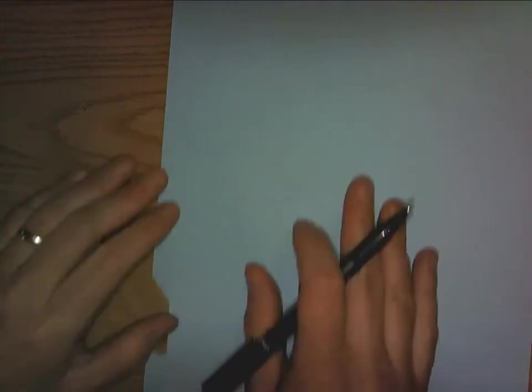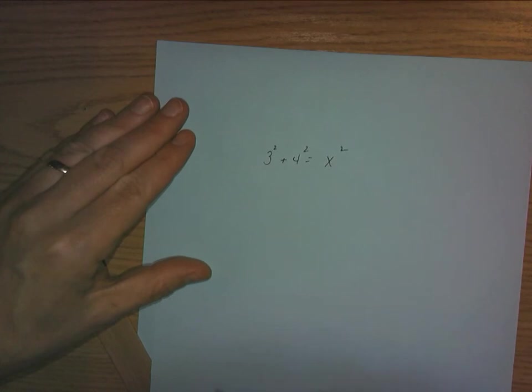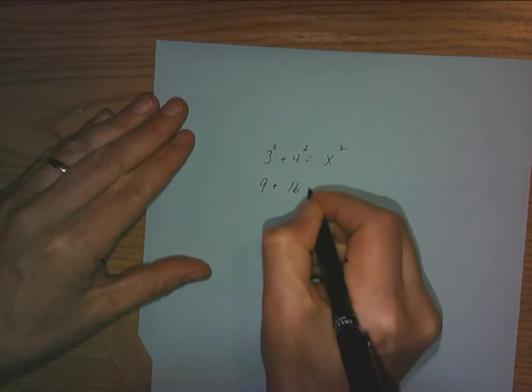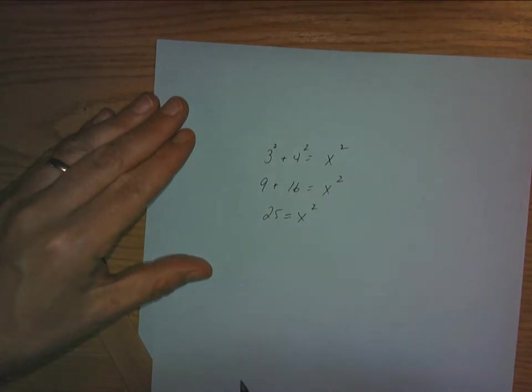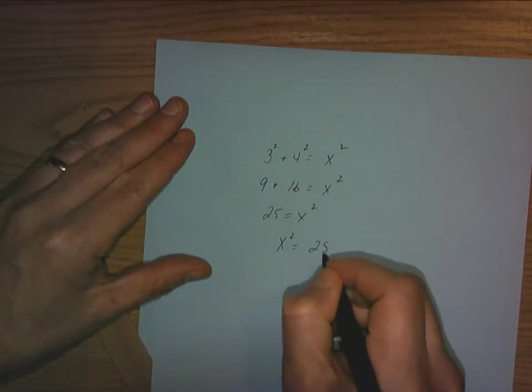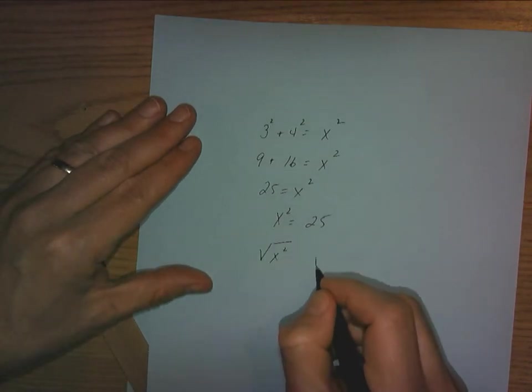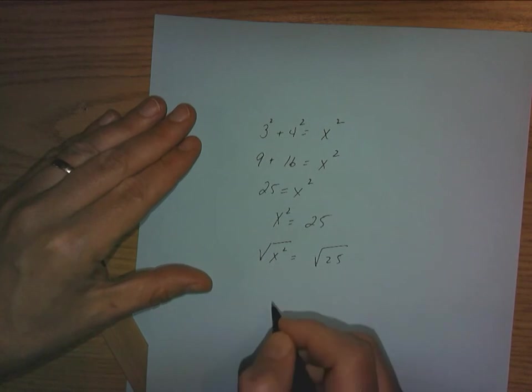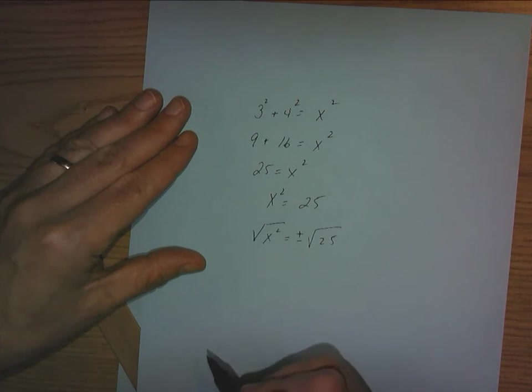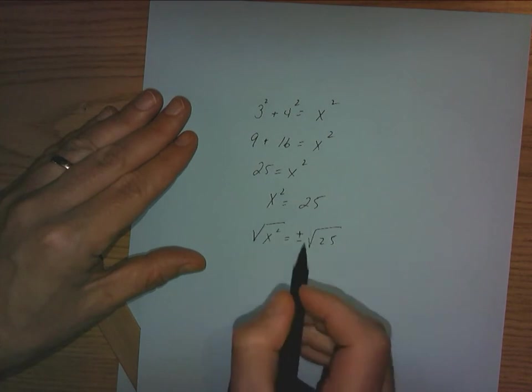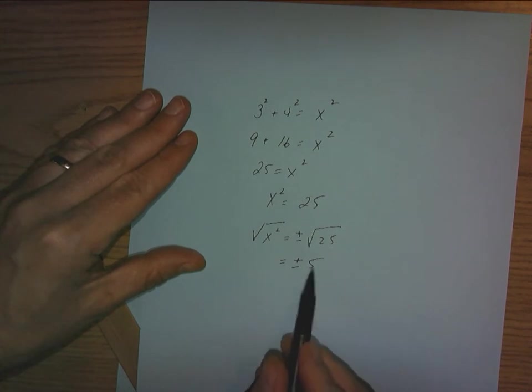So when we go into a question that looks something like this: 3 squared plus 4 squared equals x squared. We're going to do 9 plus 16 equals x squared. We're going to do 25 equals x squared. We're going to do x squared equals 25. All I did was change the order of that. We're going to take the square root of both sides. But we're going to be a little bit more mathematically mature. We're going to say that there is both a positive answer and a negative answer to this. When we take the square root, there's two answers. One of the answers is positive 5. The other answer is negative 5.